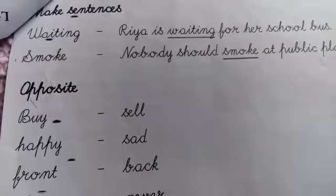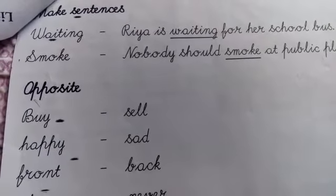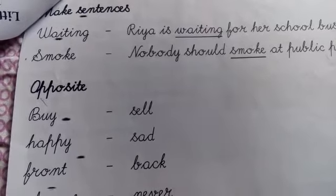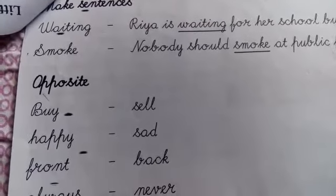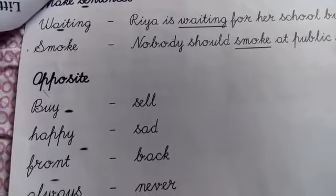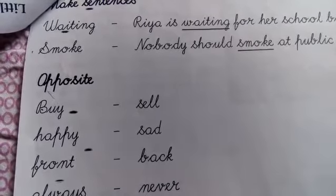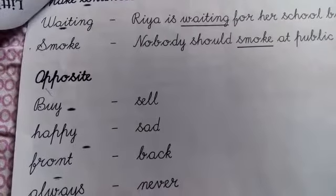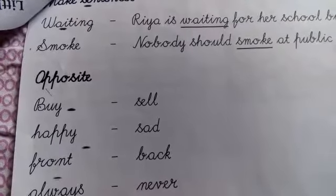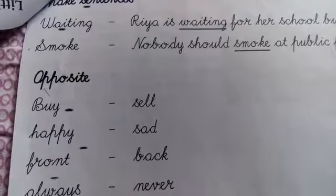And the next heading is make sentences. Make sentences. Sentences banane hai. Okay. Waiting. First heading. First spelling is waiting. Waiting. Sentence kya banane hai.